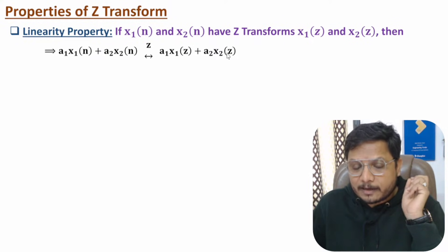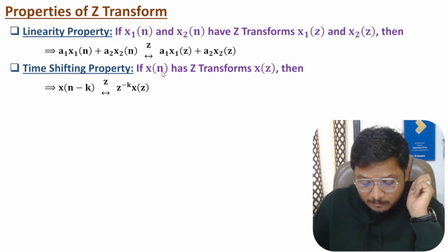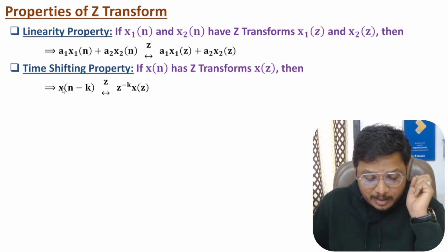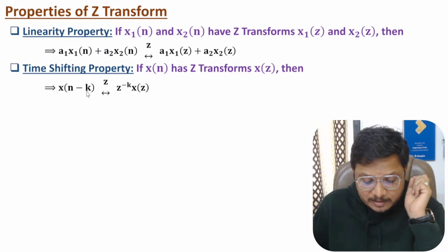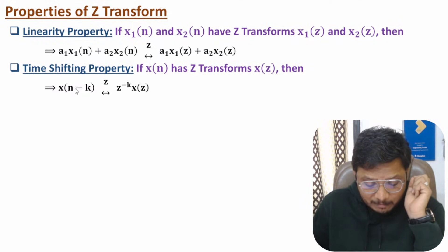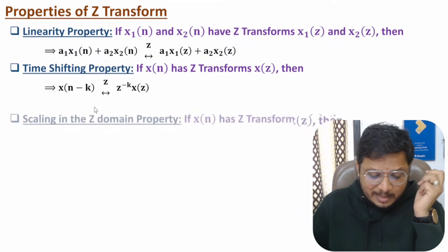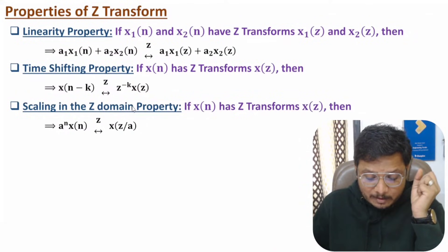The second property is time shifting. If you have signal x(n) with Z-transform X(z), then the Z-transform of x(n minus k) will be z to the power minus k times X(z). We are shifting x(n) as x(n minus k), and because of this shift of minus k, in the Z-transform we multiply by z to the power minus k.